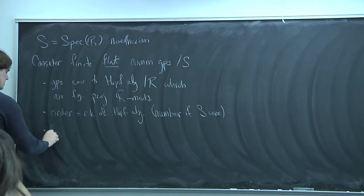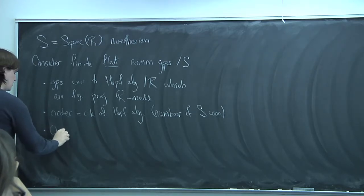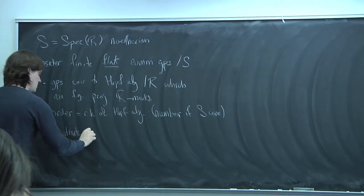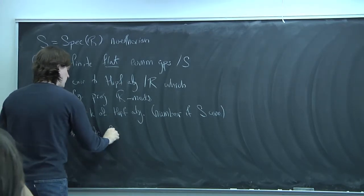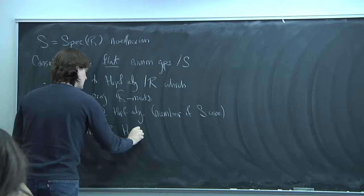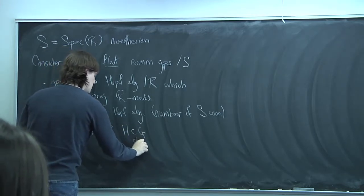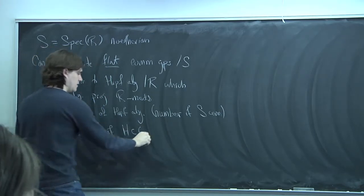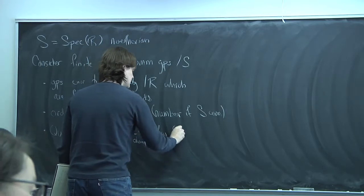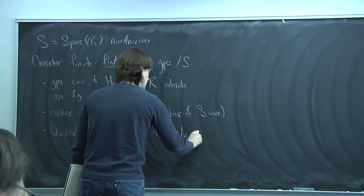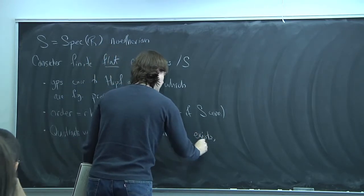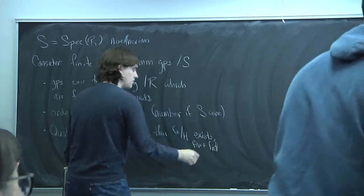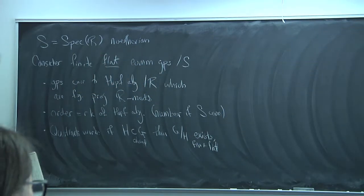Quotients work as they should. If you have a closed subgroup scheme H, and both G and H are finite and flat, then G mod H exists, it's finite and flat, and it has the order you'd expect.